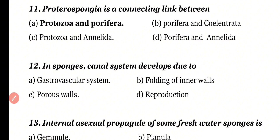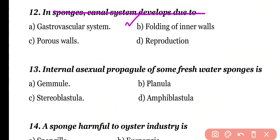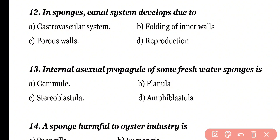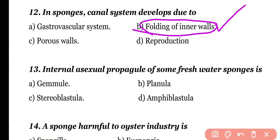Question number 12. In sponges, the canal system developed due to: gastrovascular system, folding of inner walls, porous walls, or reproduction. Correct answer is option B. In sponges, the canal system is formed due to folding of inner walls.